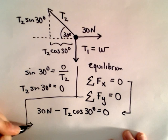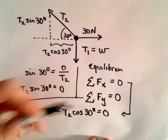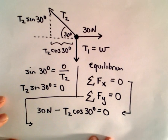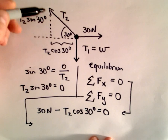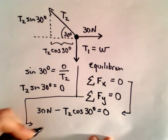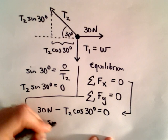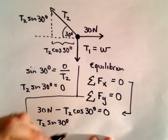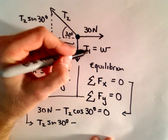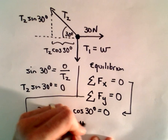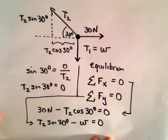And then if we sum up the forces in the vertical direction, that's also going to be zero. So we'll just make upwards positive. So in this case, we have T2 times sine of 30 degrees. And in this case, we would have to subtract away w, and that's going to equal zero.